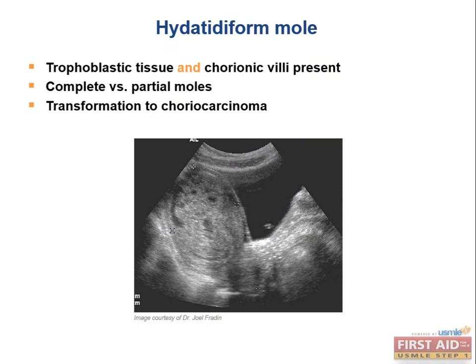This image shows an endovaginal ultrasound showing a heterogeneously echogenic mass with multiple hypoechoic foci consistent with molar pregnancy. Snowstorm appearance on ultrasound is another one of those medical buzzwords worth knowing because it's always used in this context. Cluster of grapes is another buzzword that's often used. Be ready to recognize them in question stems.